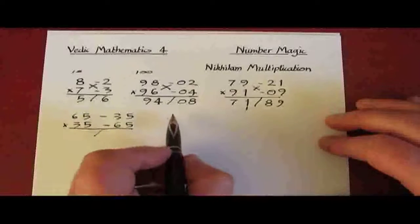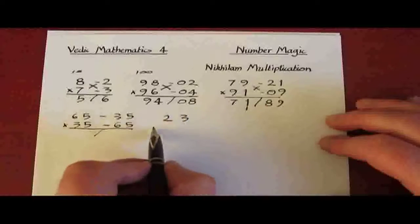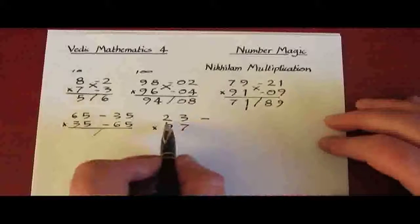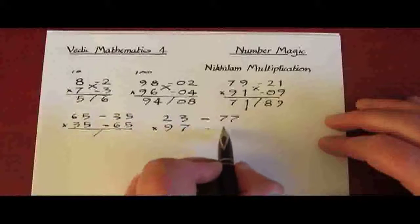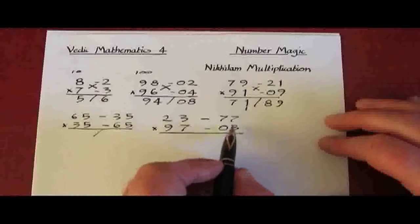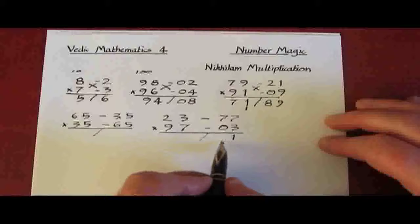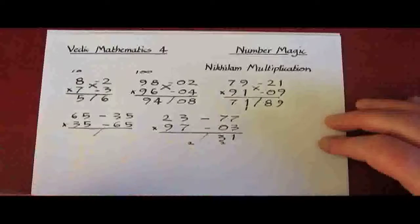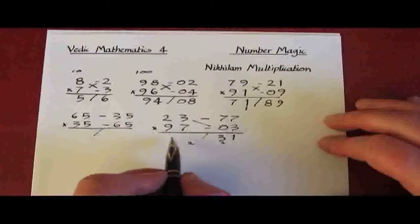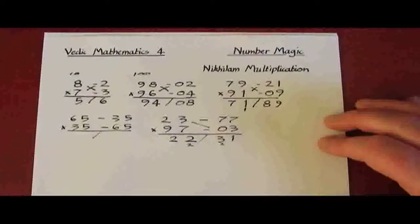We just need one of the numbers to be close to the base. Let's have a look at this: 23 multiplied by 97. Here the deficiency is 77, and here is 03. And 3 times 7 is 21. Again 21 add this carry 2 gives 23 for the next step. And then cross subtract, 23 take away 3 leaves 20. Add in the carry 2, and the answer is 2231. Which is great.